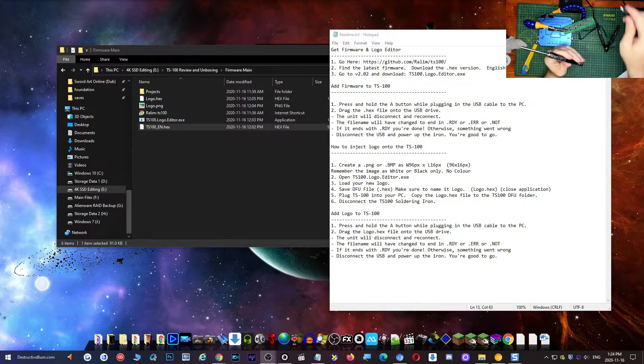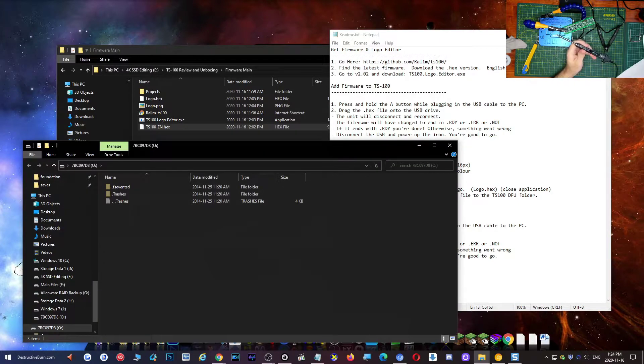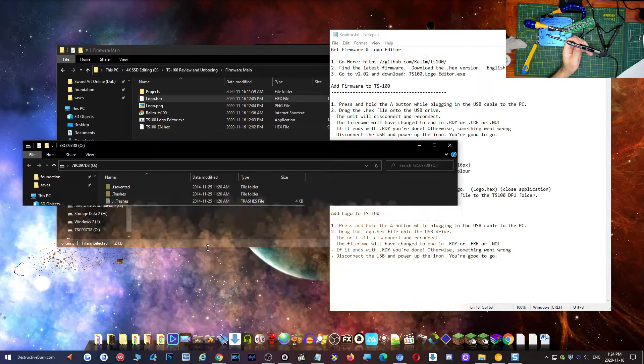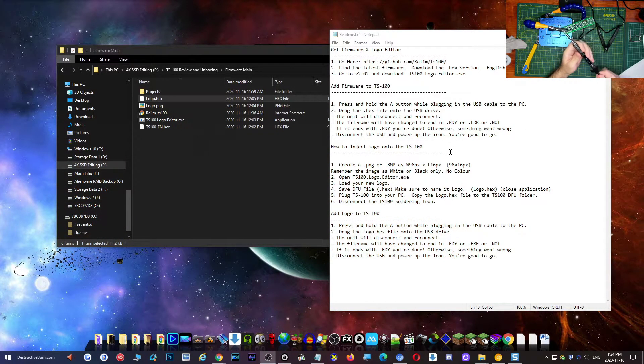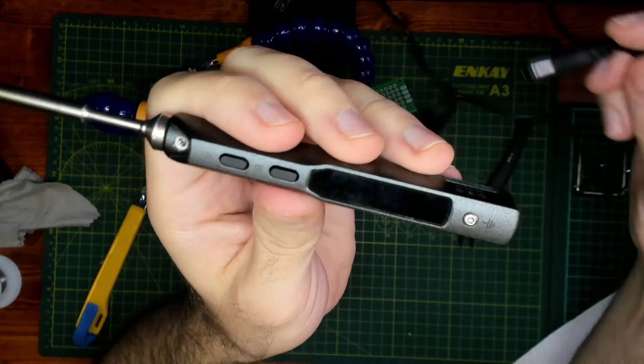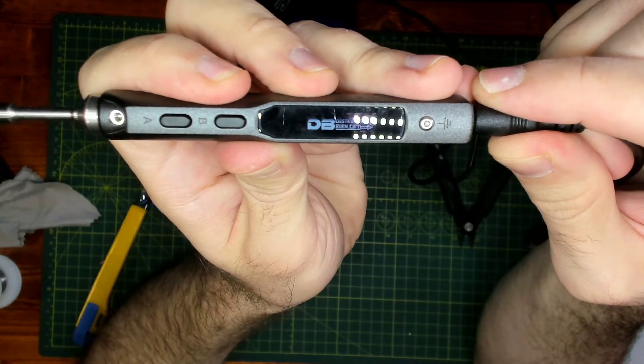I'm going to unplug it. I'm going to plug the cable back in while holding A because we want to bring up that Explorer window again. I'm holding A and putting in the cord now. DFU mode again. We can let go. Now let's grab the logo and drop it in here as well. There it is. It says RDY, it's ready. Let's close this, unplug it. I'm kind of curious to see what my logo looks like on here. There it is, DestructiveBurn.com.